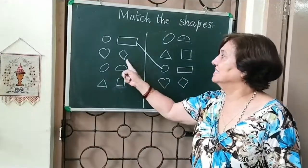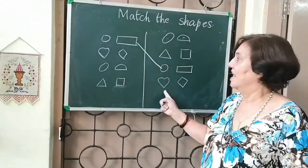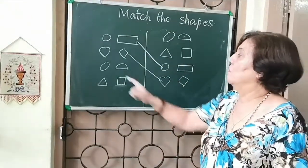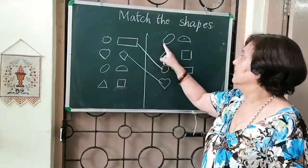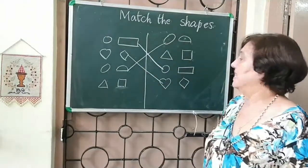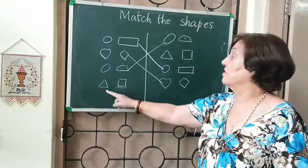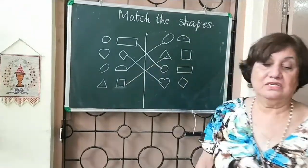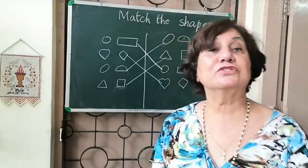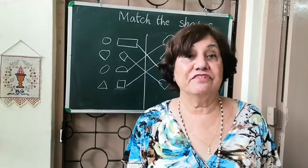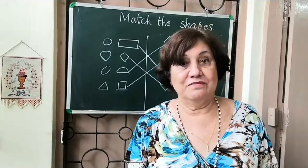Now the second one, it's very easy Heart and diamond, it's just here Heart and diamond, so I'll match it with this Then oval and half a circle Here's oval and half a circle, I'll match it with that And the last one, triangle and a square And I'll match it with a triangle and a square So children, I hope you enjoyed today's class.